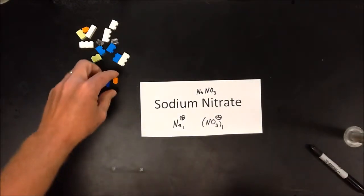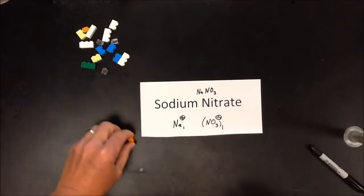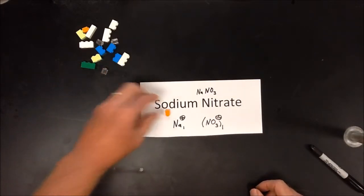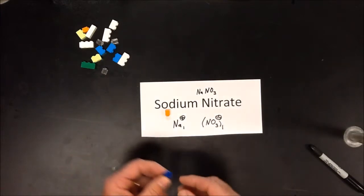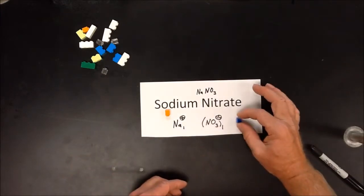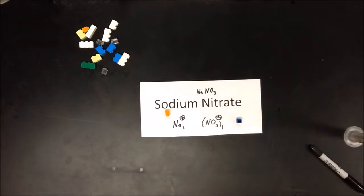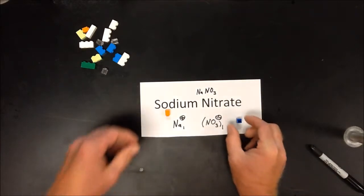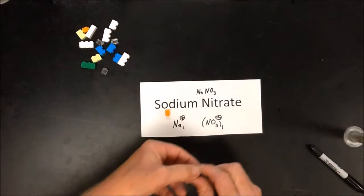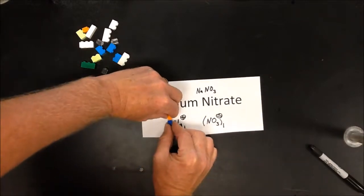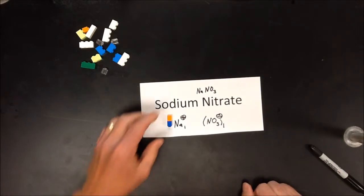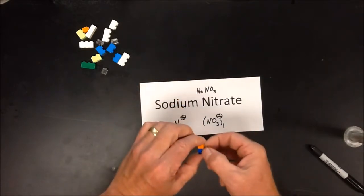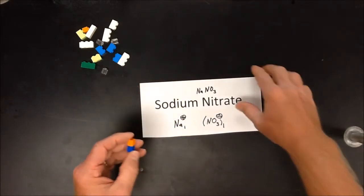I can also do this with Legos. Sodium is a plus 1, so that's a single-studded Lego. Nitrate is a minus 1, so there's one port. I snap them together to make a symmetrical shape — one sodium, one nitrate — giving NaNO₃.